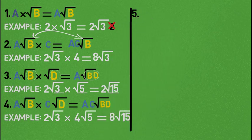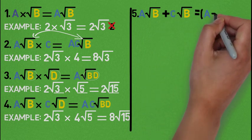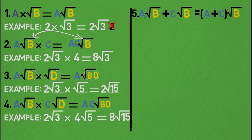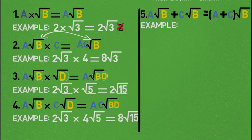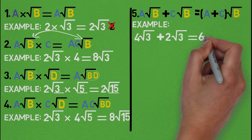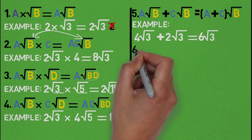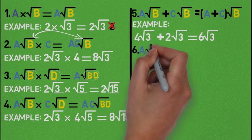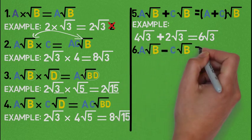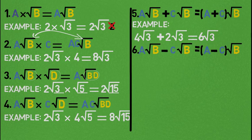Property number 5: A root B plus C root B gives (A+C) root B. When adding, you just add the numbers multiplying the root signs — A and C are added, then root B is maintained. For example, 4 root 3 plus 2 root 3 gives us 6 root 3. The same thing applies for subtraction: when subtracting two sets, you subtract the numbers multiplying the root signs, giving (A minus C) multiplying root B.